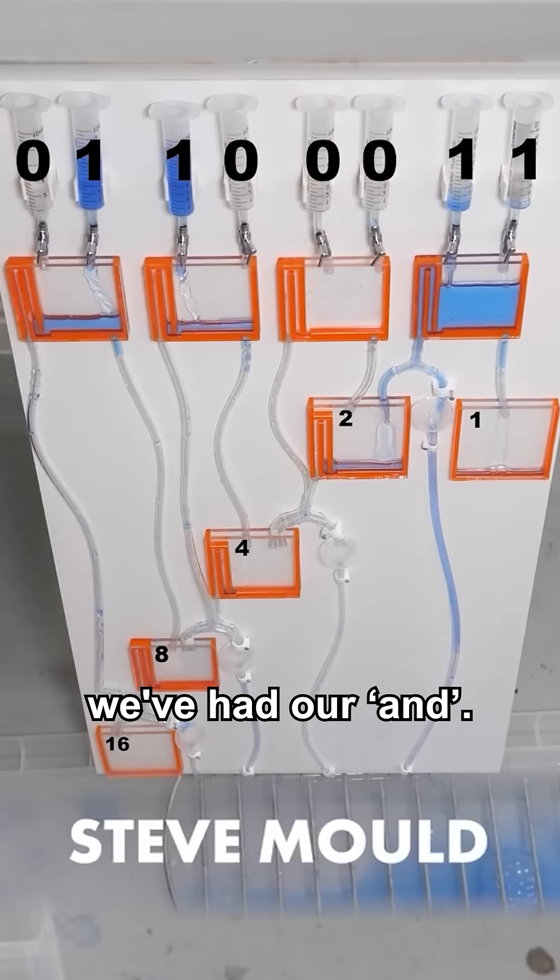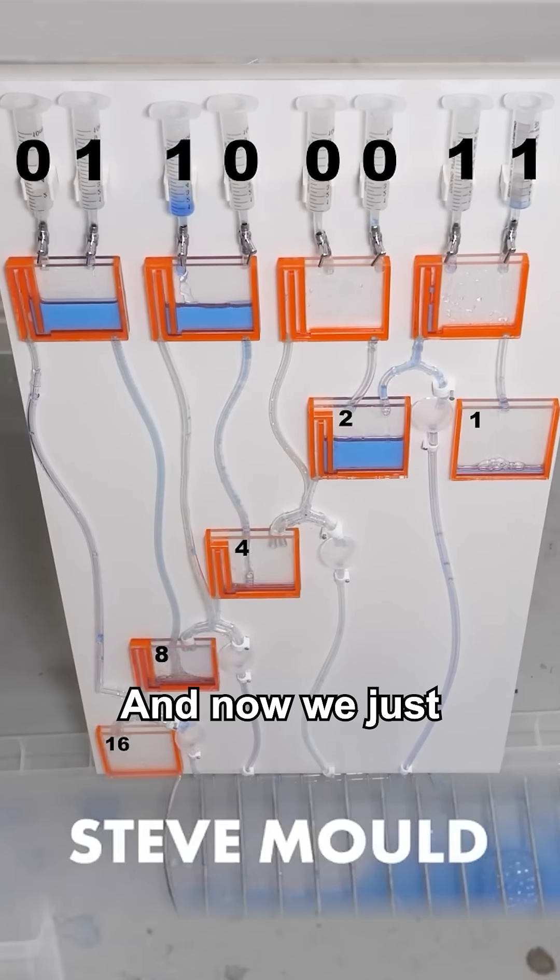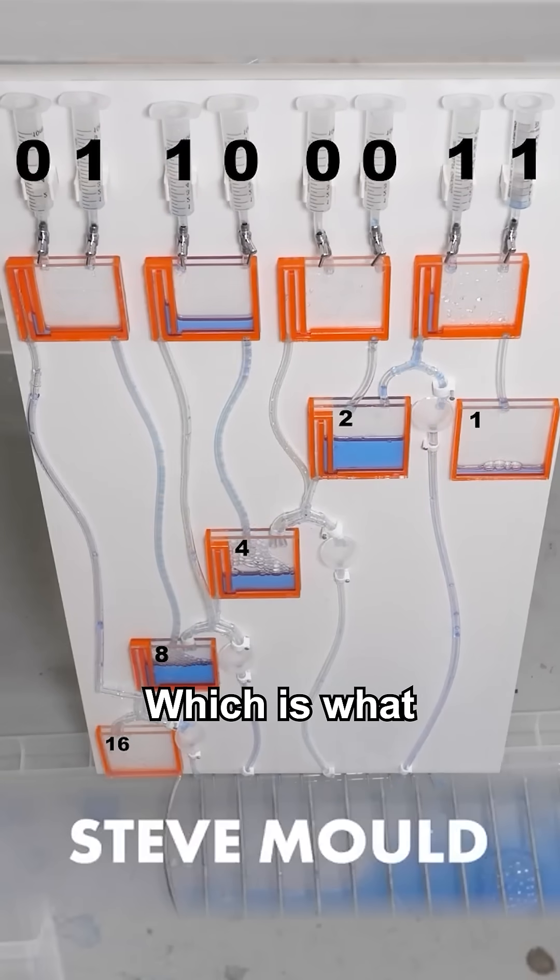Okay, bam. We've had our AND. That split had to work. And now we just need two slow leaks, which is what we've got.